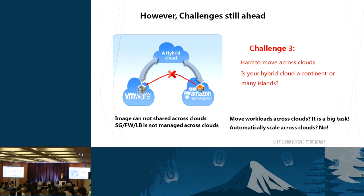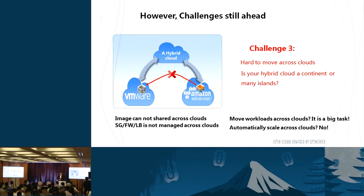The third challenge is the difficulty of moving workloads across clouds with a single one-click triggering of whole migration tasks. Image types and formats across different hybrid cloud types are quite different. Layer 4 to 7 networking capabilities — including security groups, firewalls, and load balancing — are also not fully managed across clouds, making it difficult to automatically scale workloads without changing networking and security attributes during the whole procedure.